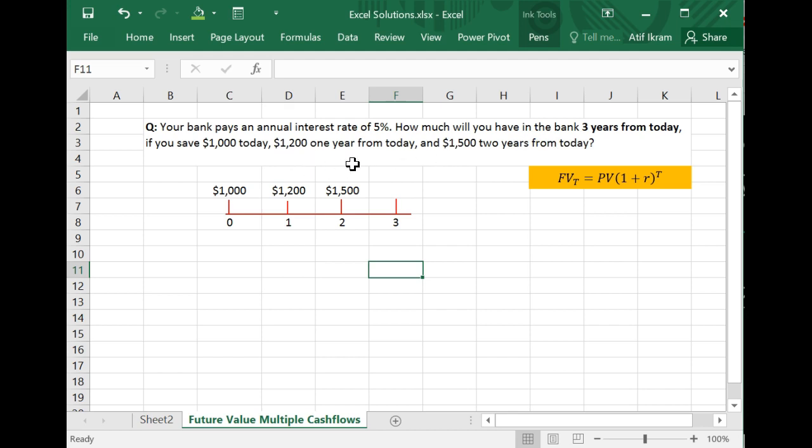And so what I've done is I've depicted the situation on a timeline which is really helpful because it helps you see graphically what's going on. So basically if this is today then you're going to deposit $1,000 in the bank and this is going to sit in the bank for one, two, three years and you're going to find out how much this is worth in three years.